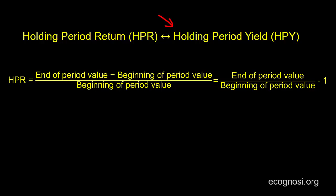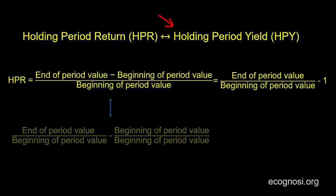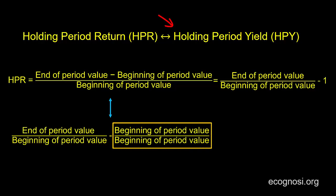For those who cannot see why this is the case, it's simply because this is the same as this. And since this part equals one, we end up with end of period value over beginning of period value minus one. Makes sense? Let's now illustrate with some examples.